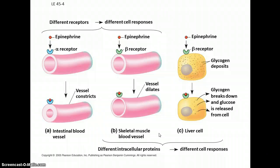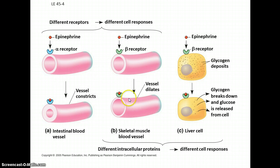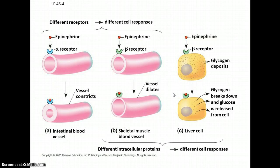A particular hormone — in this case epinephrine — can elicit different responses depending on which cell is receiving it. It restricts blood flow to the intestines but speeds up blood flow to the skeletal muscles by dilating those arteries. In the liver cell, it elicits the breakdown of glycogen into glucose, making more food available. So epinephrine basically speeds up your metabolism and gets you ready for action.